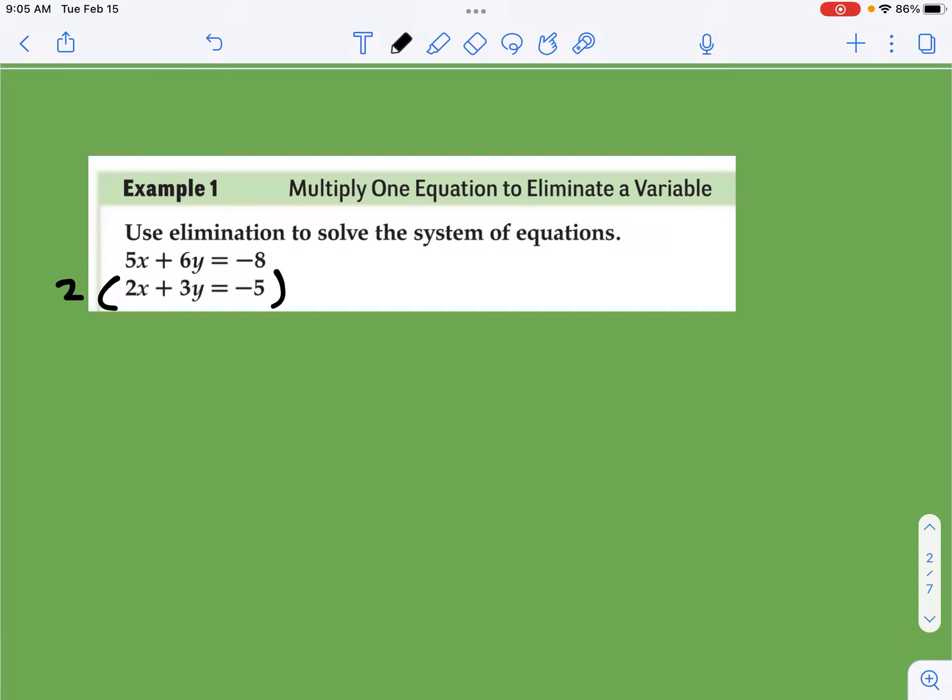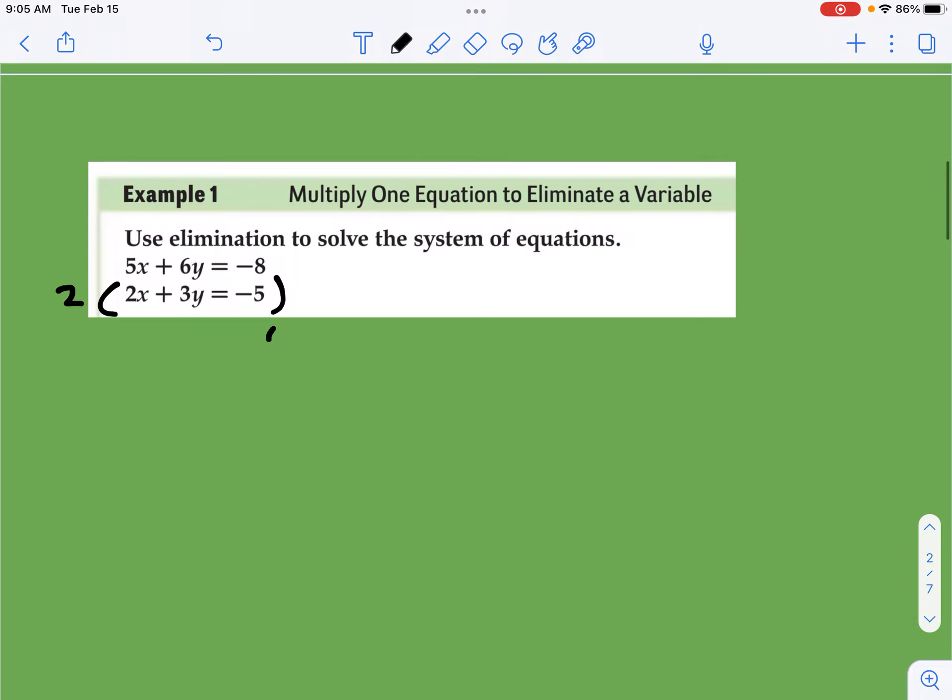So now what I'm going to do is I'm going to rewrite my top equation, because I didn't do anything to that. It equals negative 8. And then I'm going to rewrite my bottom equation, but with that multiplication happening. So 2 times 2 is 4x. 2 times 3y is 6y. Now you can see how we're doing here, right? We're in good shape. And then 2 times negative 5 is negative 10.